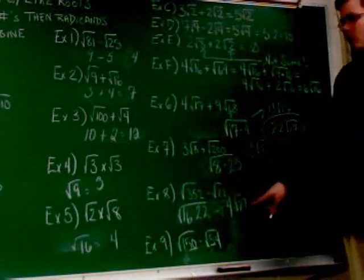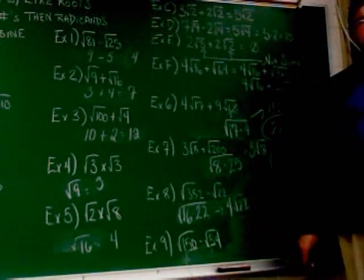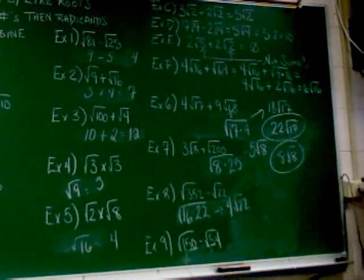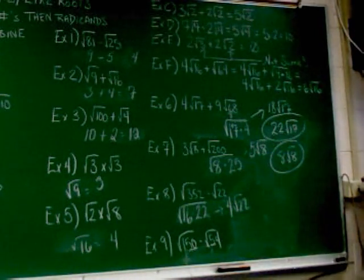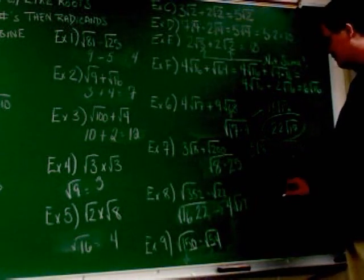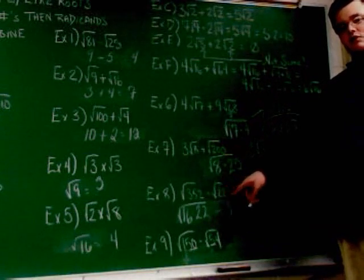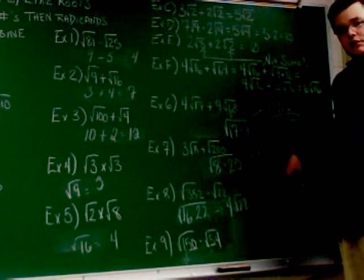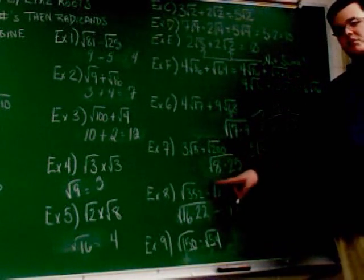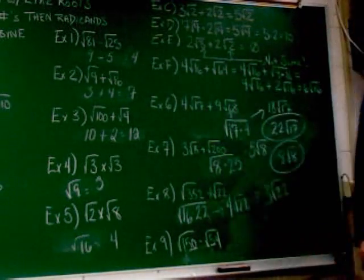So, if I have 4 root 22s and I take away a root 22, how many root 22s do I have left? I have 3 root 22s left. So, if 4 root 22 minus root 22 is 3 root 22s, what number would be in front of that root 22? A 1. Exactly.